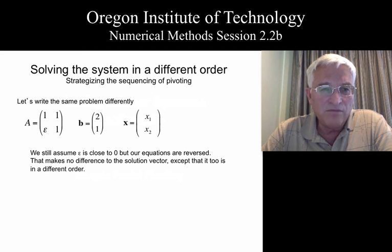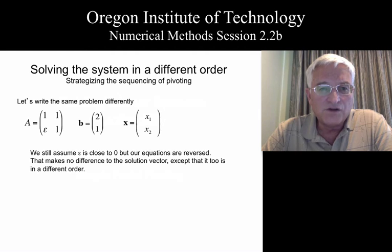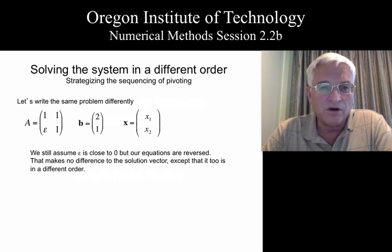Matrix A is the same matrix as before with row 1 and row 2 swapped, and of course we have to swap the values of B to match the change in the rows of A. Notice we don't change our x vector — the solution vector remains the same because the order of linear equations doesn't matter; x1 is still x1 and x2 is still x2. By doing this swap, we now have a very dominant value in the main diagonal and small values in the off-diagonal.